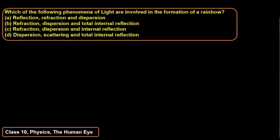Hello students, in this video we will discuss a problem from grade 10 Physics. The chapter name is Human Eye. The question here is: which of the following phenomena of light are involved in the formation of a rainbow?